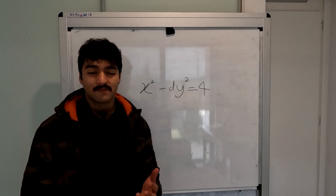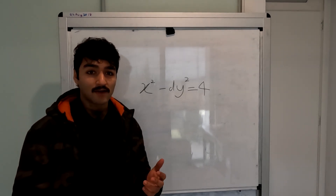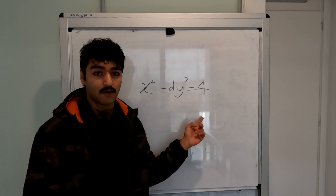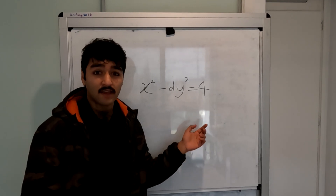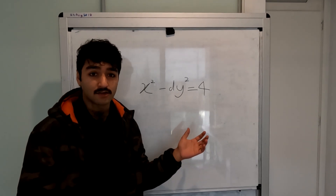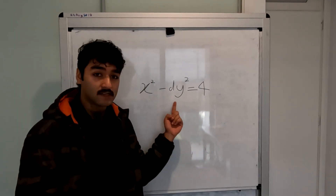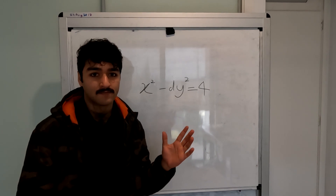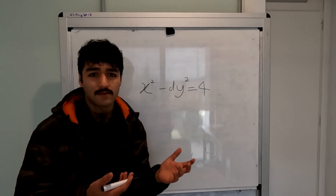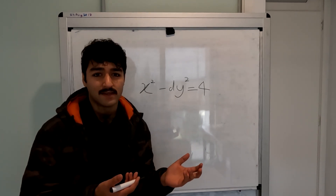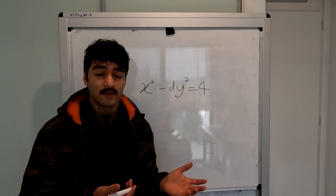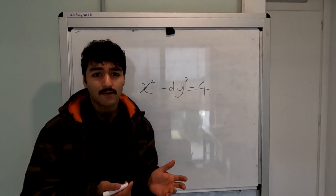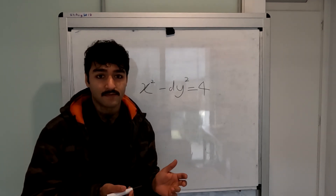I want to ask you something. Does the equation x squared minus dy squared equal to 4 admit any odd integer solutions for a positive integer d congruent to 5 modulo 8? You probably won't be able to answer immediately, right? So let's take this back a minute. How about we try for d equals to 5?